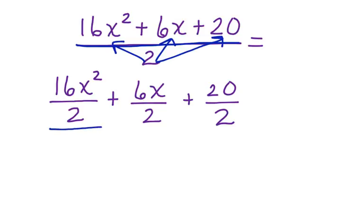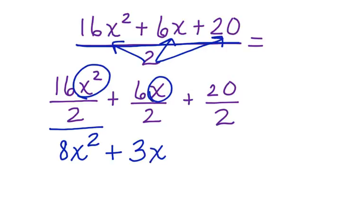Let's start with this first term. 2 goes into 16 eight times. There's nothing to simplify this with, so we bring down the x squared plus 2 goes into 6 three times. Again, we can't simplify the x, so we bring it down. And we have 2 goes into 20 ten times. This is our answer.